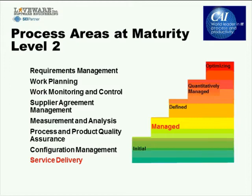Maturity level three is called the defined level, where the process is characterized for the organization — we take this to mean knowledge sharing at the organizational level. Level four, quantitatively managed, is when you stabilize processes so well that control can be exercised statistically, and you completely understand your capability to supply customers with desired products or services. At level five, the highest level, there is an emphasis on continuous improvement based on the statistical knowledge created at the previous level.